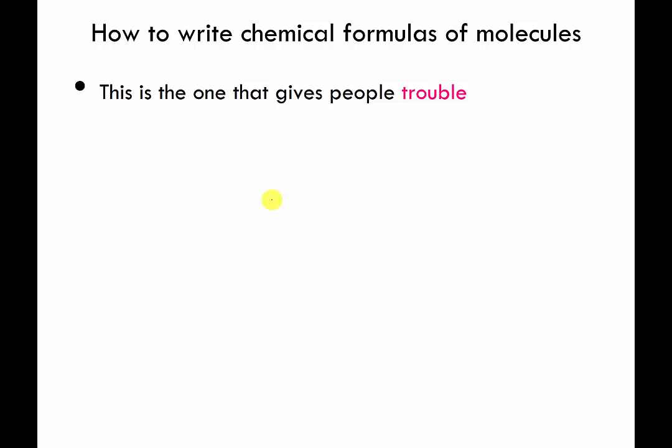Okay, this one sometimes gives people trouble again. You can pause the video after I ask the questions. How many calciums, how many nitrogens, and how many oxygens are there in this molecule? You can pause and unpause. There's 1 calcium. There are 2 nitrogens. And there are 6 oxygen atoms.